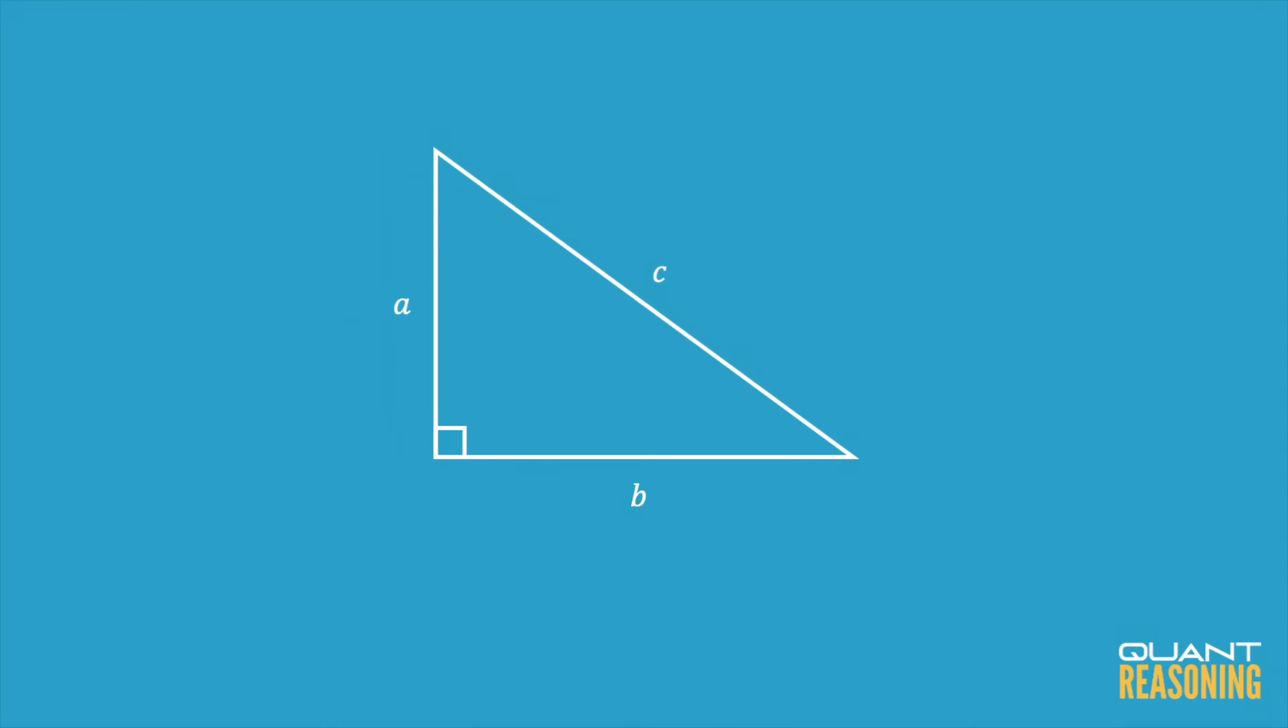Now that second special triangle, the isosceles right triangle, that one is special because two of the sides are equal to one another. So we can say there that if the two legs are one ratio unit and one ratio unit, using again the Pythagorean theorem we can find that the hypotenuse is the square root of two ratio units. So that's another ratio that we must memorize for right triangles.